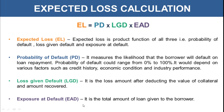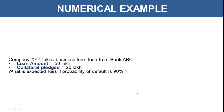Exposure at Default is simply the total amount of loan that has been provided to the borrower by the lender or the bank — the full amount that is exposed and can be at default, hence the name Exposure at Default. To recap: Expected Loss = Probability of Default × Loss Given Default × Exposure at Default.